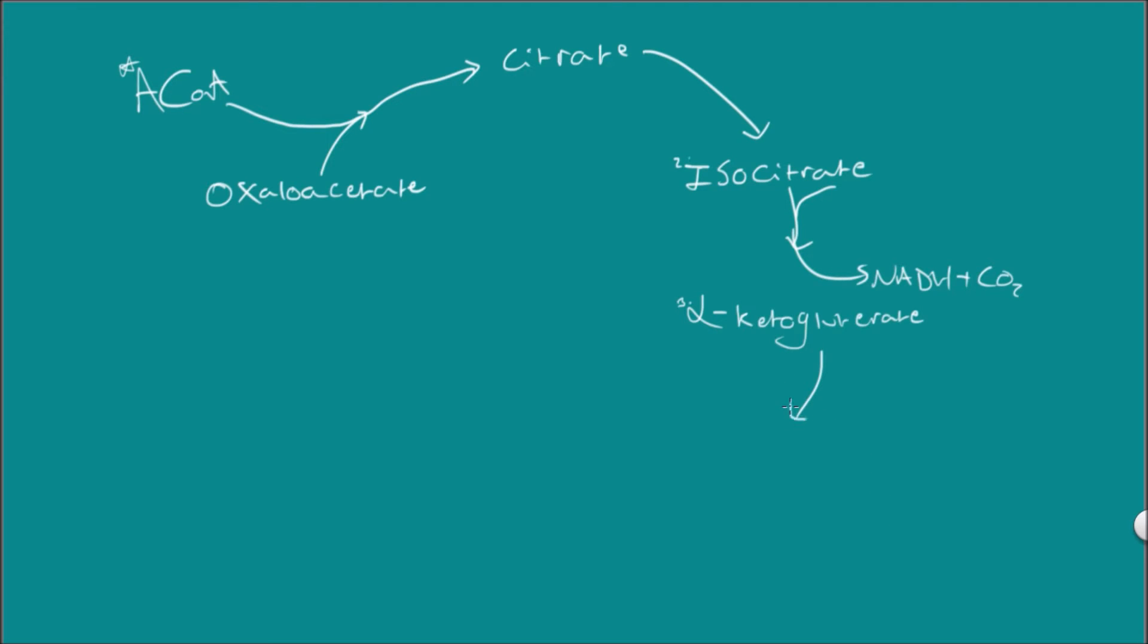Our next step, the alpha-ketoglutarate is converted to succinyl coenzyme A, and then again we get another NADH and CO2 formed. So we know that from step two to three there's NADH plus CO2, and then straight away again there's NADH plus CO2.